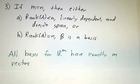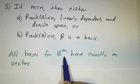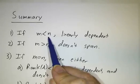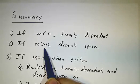And by the way, this says that every basis has exactly m vectors. It can't have more than that or else they would be linearly dependent. It can't have less than that or else they wouldn't span.